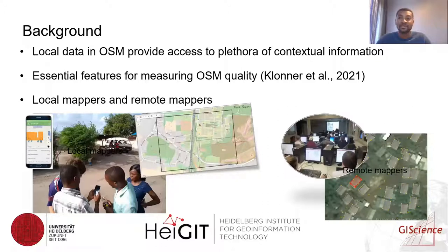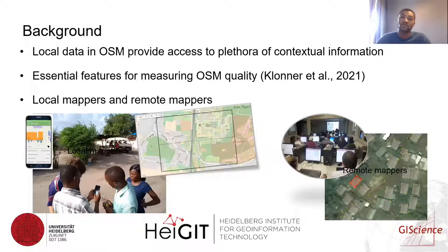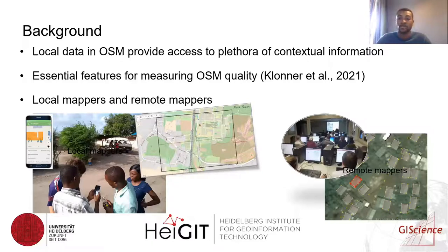The increasing availability and importance of local data in OSM has been largely acknowledged. Local data provides access to several contextual information, which can be used for several applications. It is also an essential feature for measuring OSM quality. Usually, mapping activities in OSM can be grouped into local mappers and remote mappers — while remote mappers can map from anywhere, local mappers tend to have local knowledge and contribute only locally.